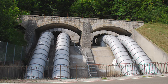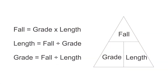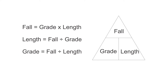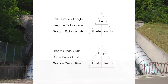Let's look at the grade formula. We can express this a couple of different ways. The one I like is: fall equals grade times length. Other people use a similar formula: drop equals grade times run. I've expressed this as both a regular formula and a triangle formula. If you don't know how to transpose a formula with three variables or how to use a solving triangle, you've got some research to do — YouTube is your friend.